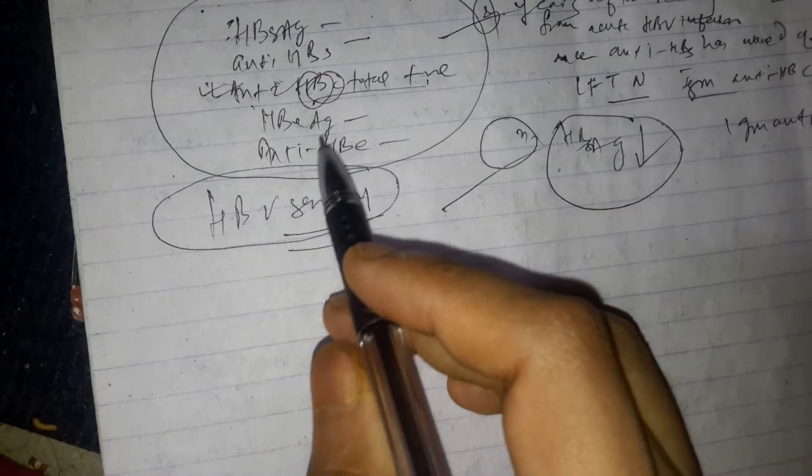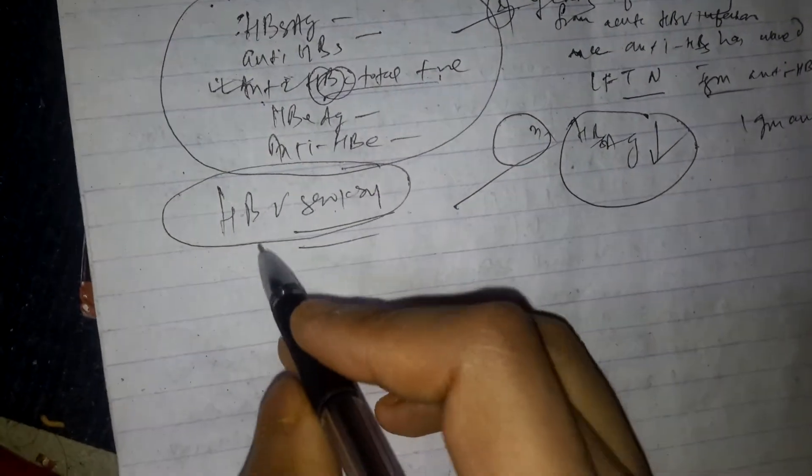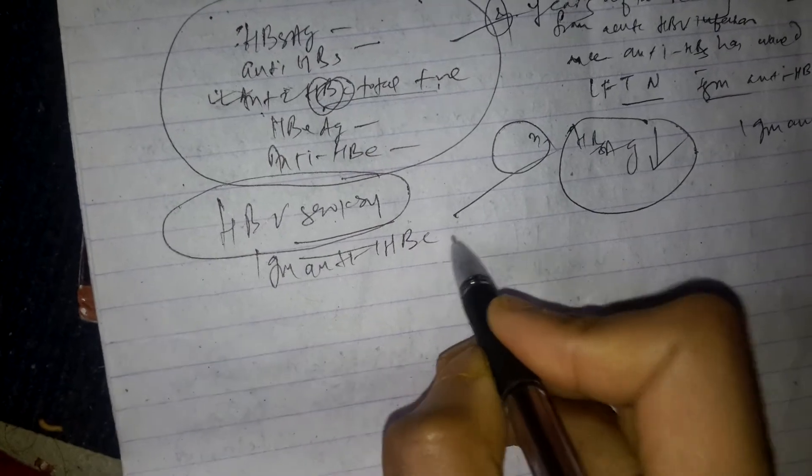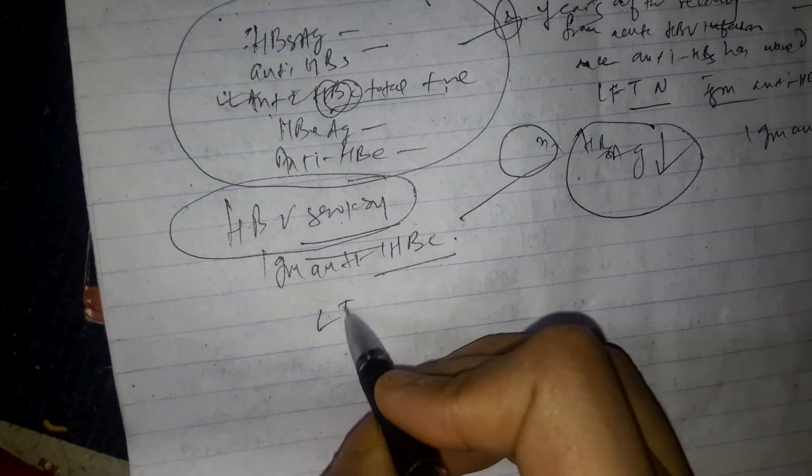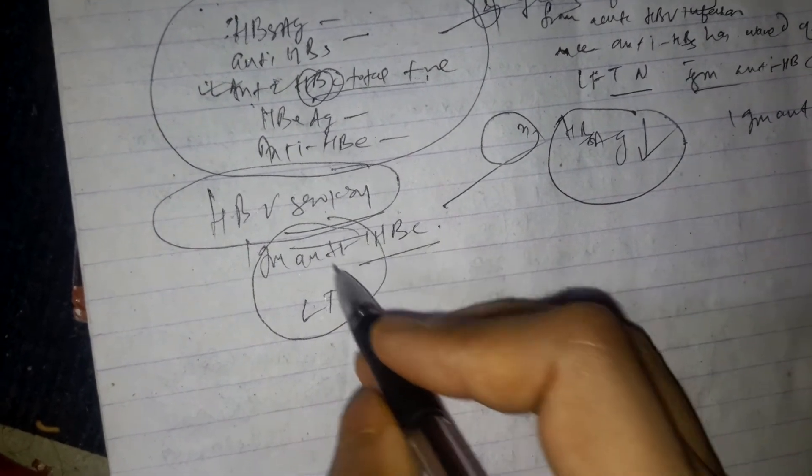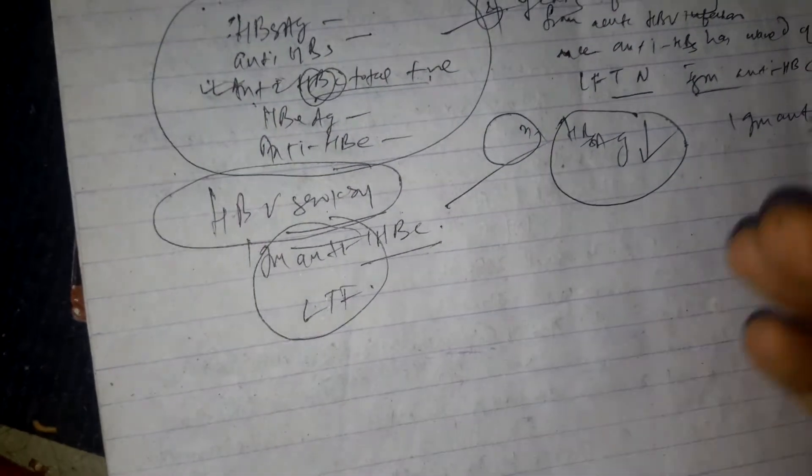If there are no changes in the results, then we order an IgM anti-HBc and liver function test to check whether it is acute infection or not. Elevated transaminase suggests acute active infection.